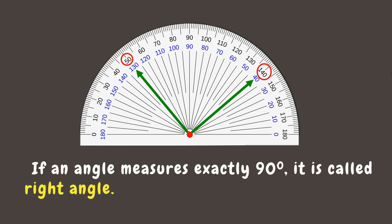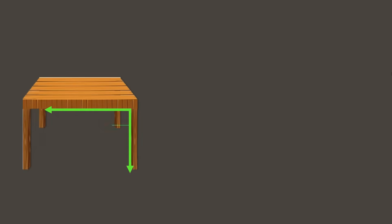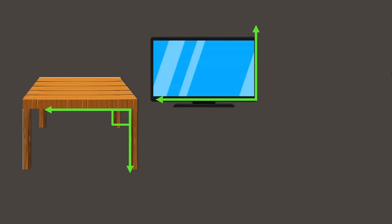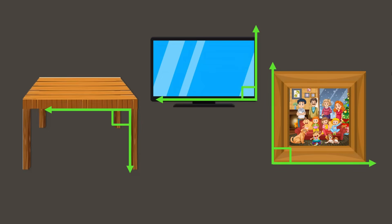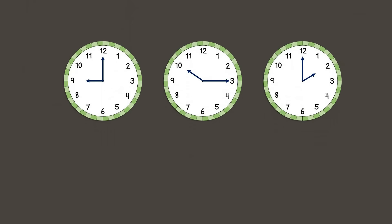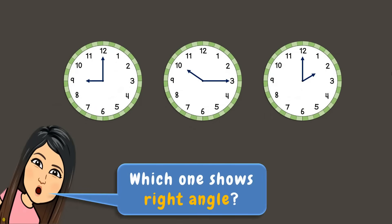We can see that this angle falls between 50 and 140 degrees. All you need to do is subtract: 140 minus 50 equals 90 degrees. We can also use the inner scale: 130 minus 40 is also 90 degrees, which is a right angle. Here are some objects that show 90 degrees. Looking back at our clocks, if your answer is the first clock, you are right — nine o'clock shows a right angle.